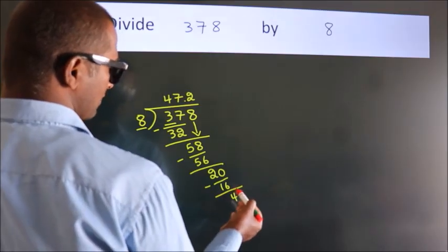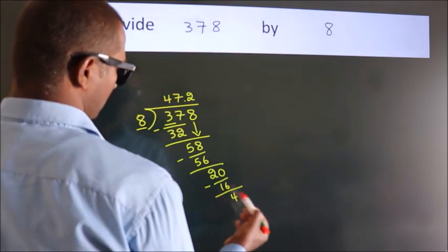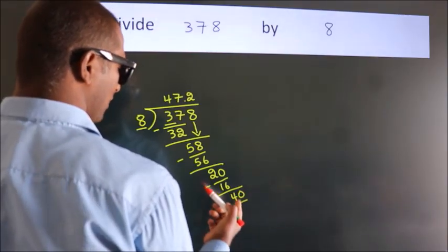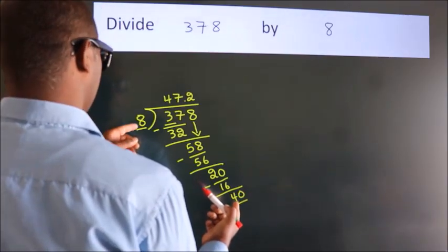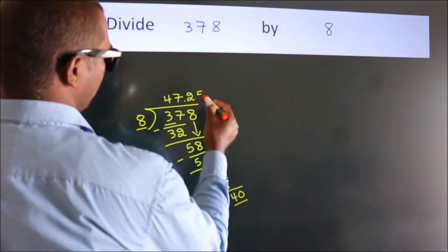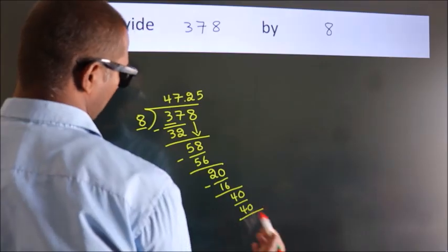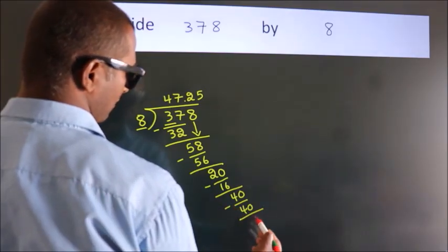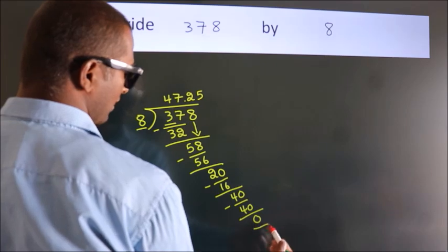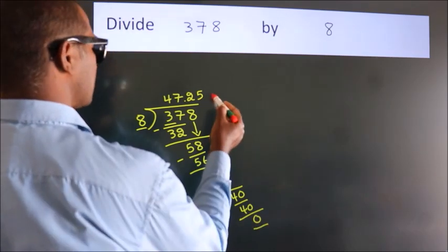After this, we already have the decimal, so directly take 0, giving us 40. In the 8 times table, 8 fives is 40. Now we subtract, we get 0. Here we got remainder 0, so this is our quotient.